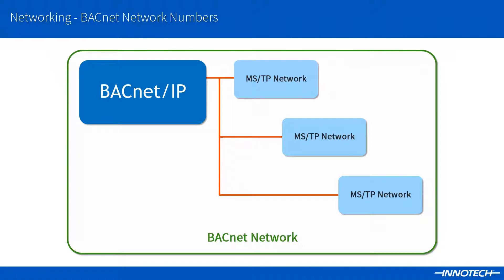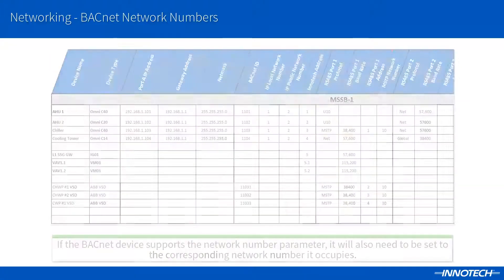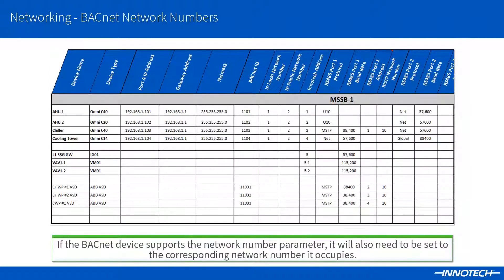The segmented networks are still seen as one large local BACnet over IP network on the site. All the network numbers are configured via Omni using Focus or Omni's web server. Planning the network is an important aspect of the project and should form part of the initial network design document to keep track of the network number topology, as shown in this example.